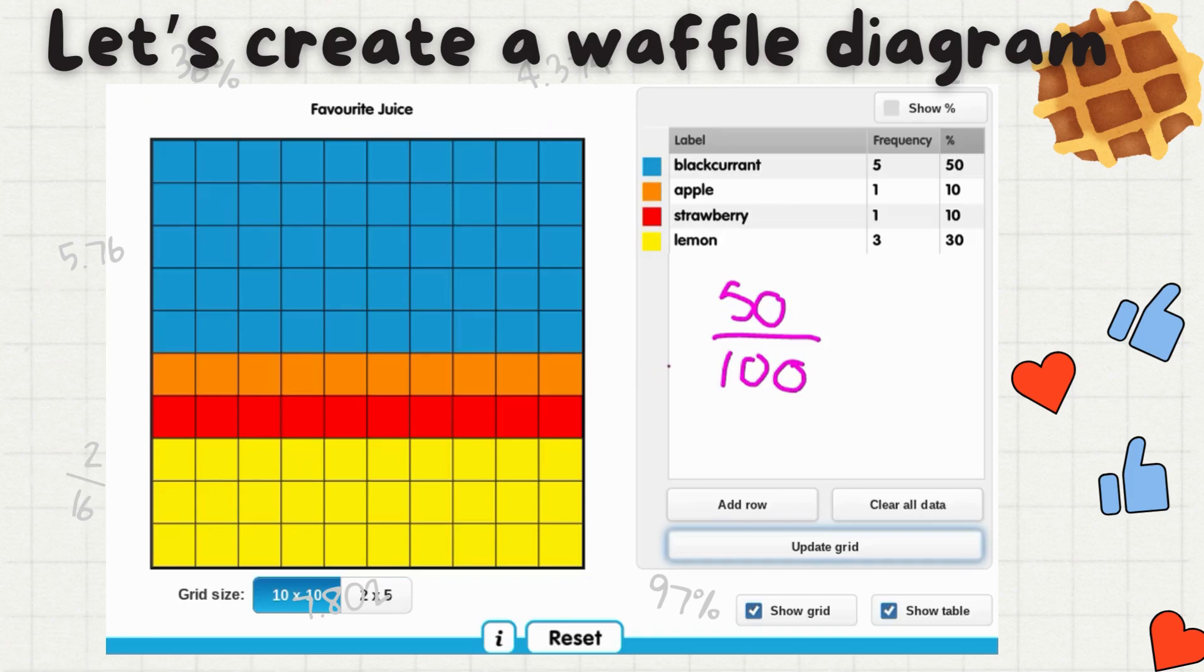And this is what we have here in the blue for the blackcurrant. And this is how we represent the percentage using the waffle diagram. So we have it on paper or in any simulation where you need to color each square to represent that is a 50 out of 100 or any of the numbers that we want to represent.